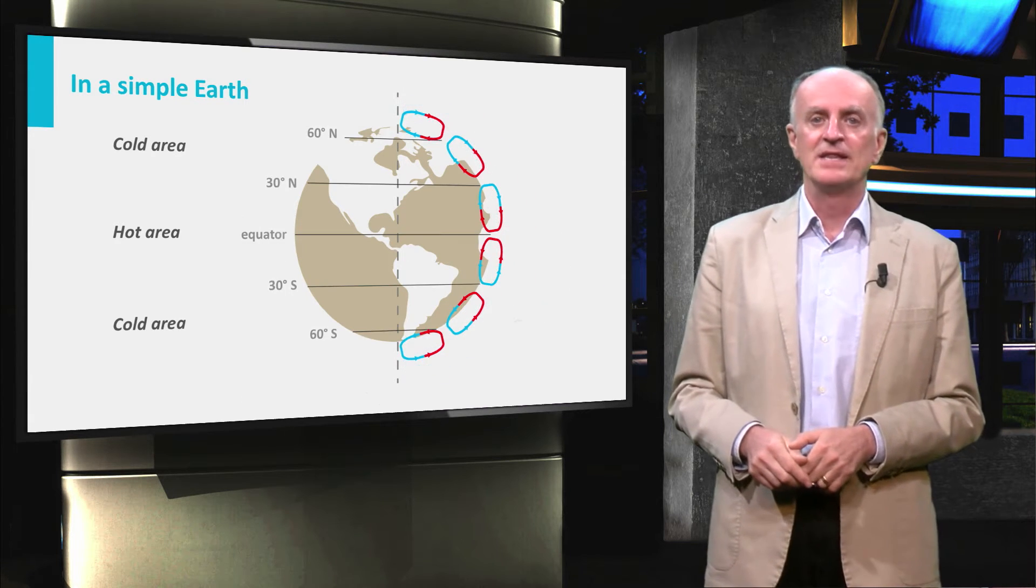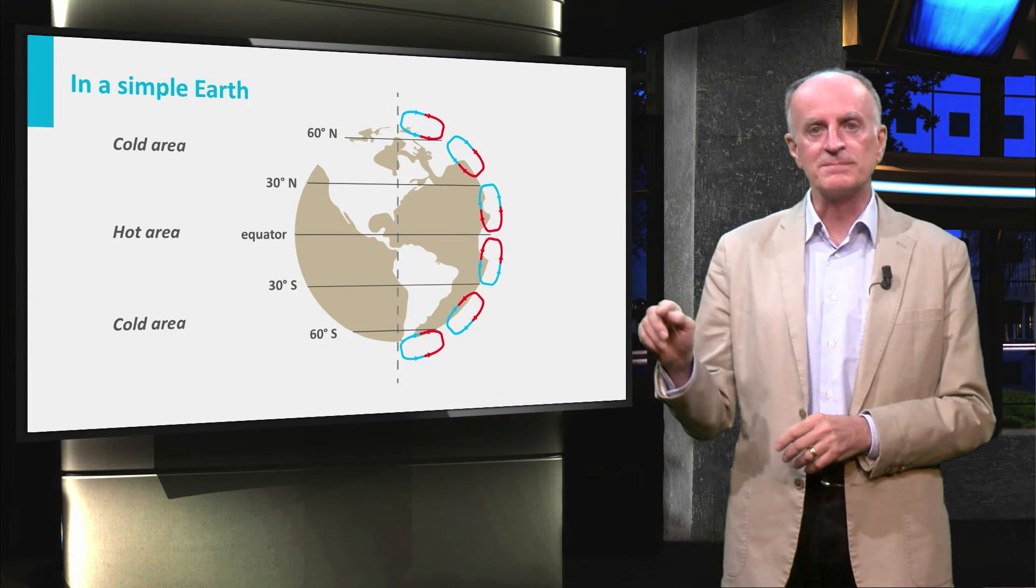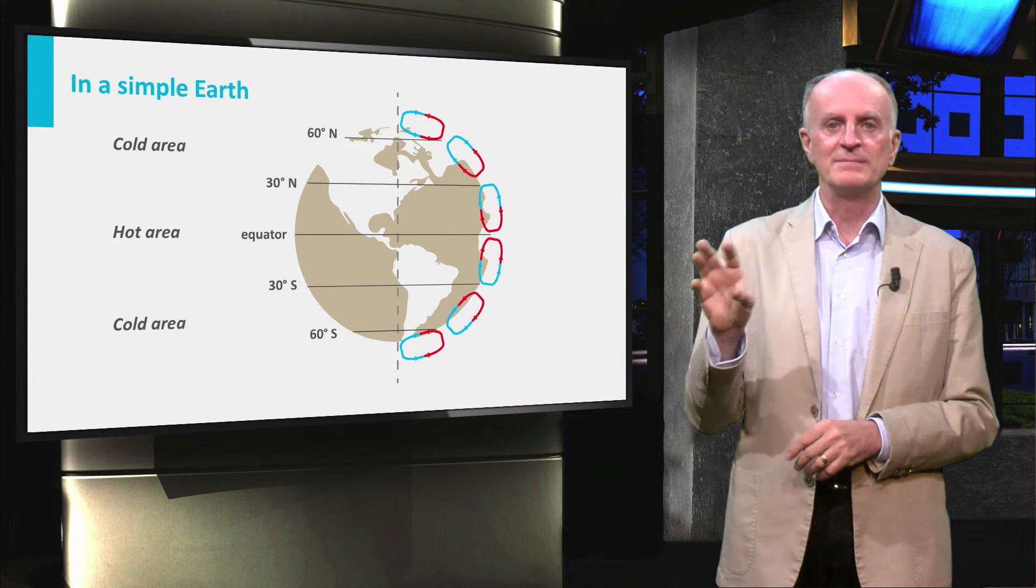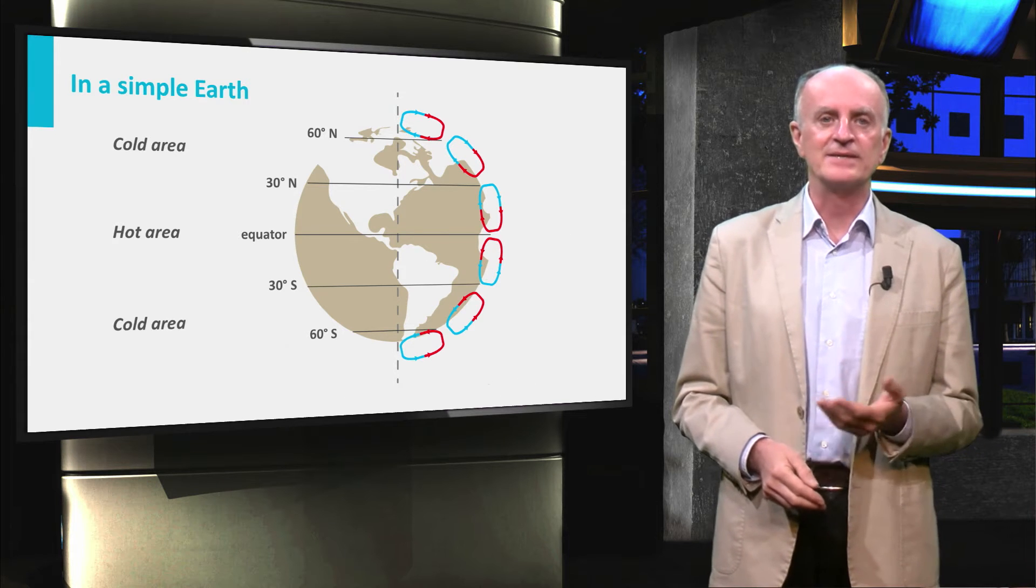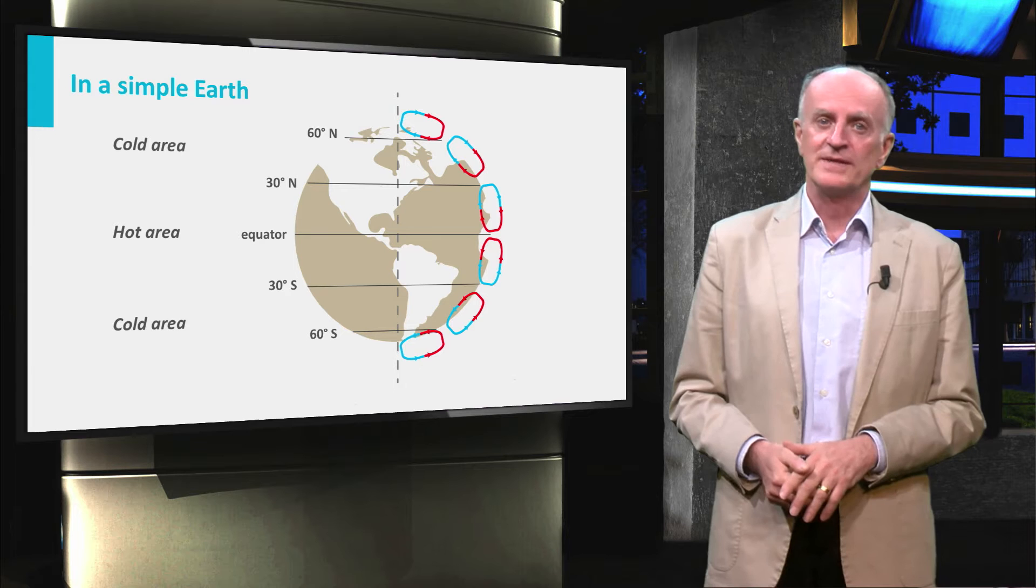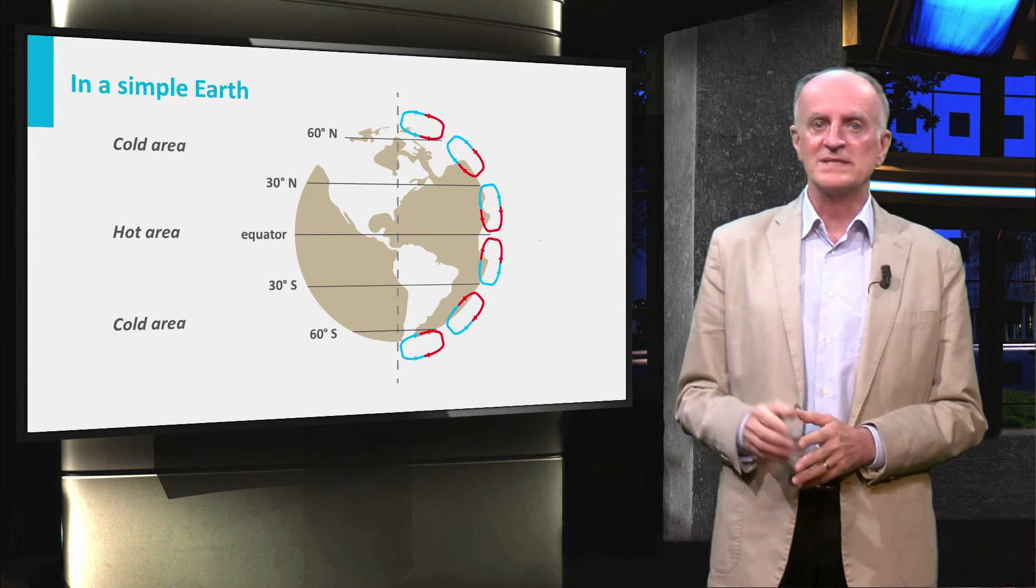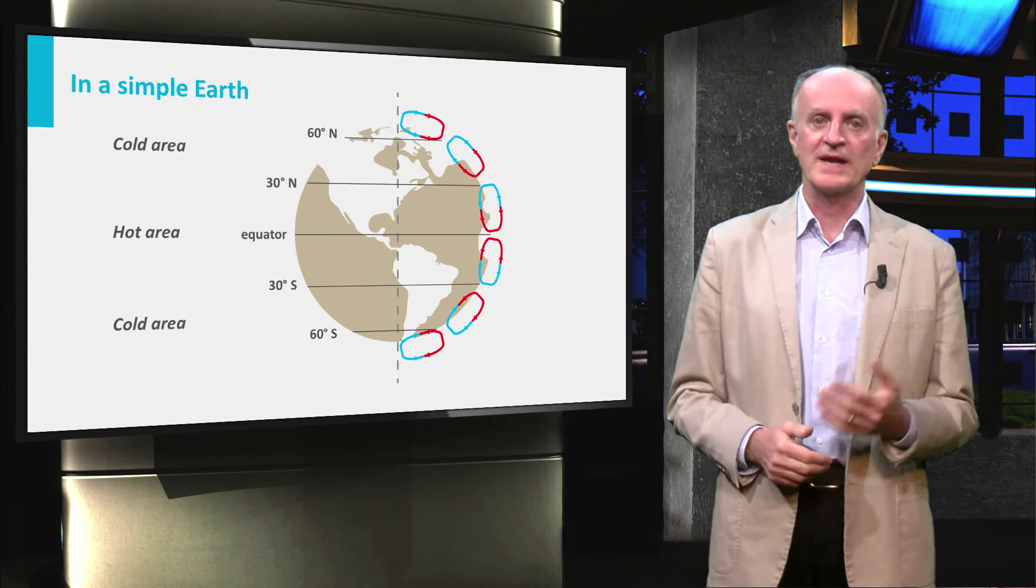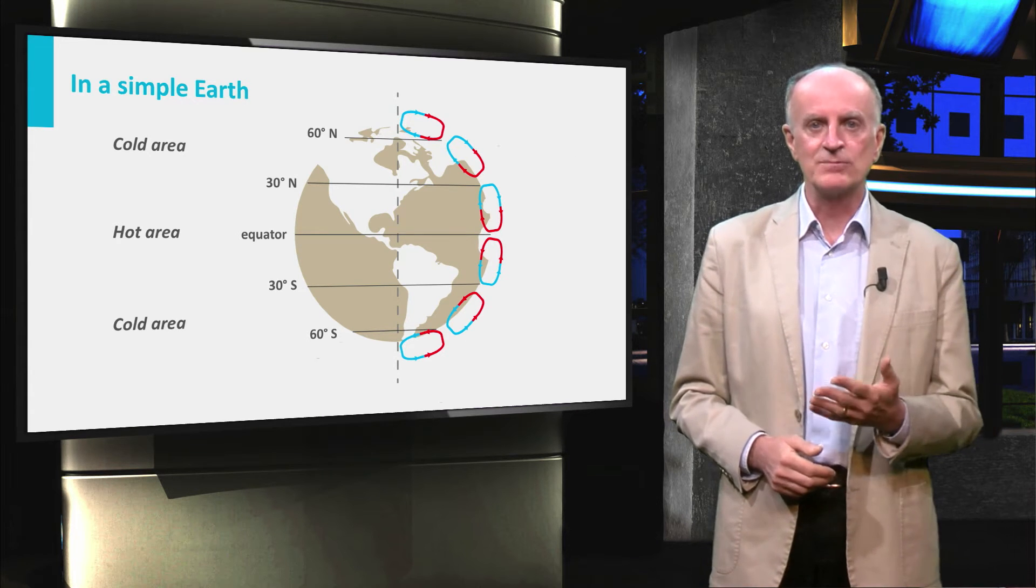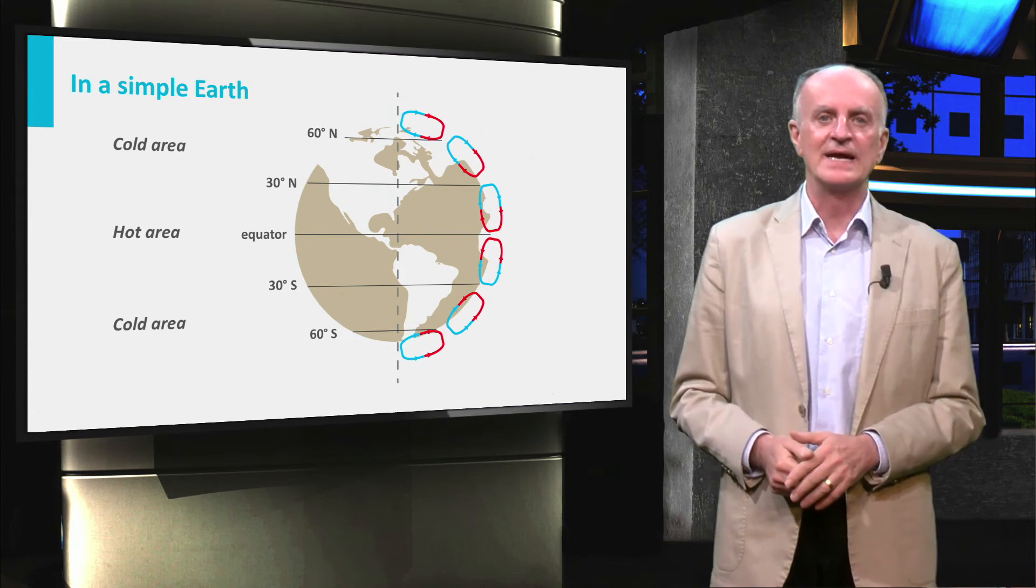In reality, the first order cell is broken into smaller cells, three on each hemisphere. Air rises in the equatorial region and descends in the tropical regions. Note also that because of the Earth's rotation, winds will be deviated according to Coriolis force. In the northern hemisphere, they will turn west when descending and east when ascending.